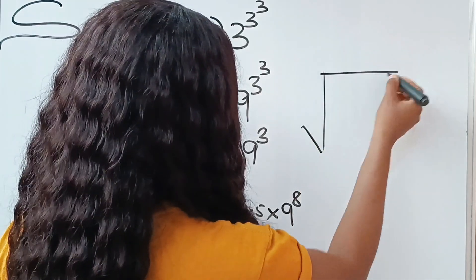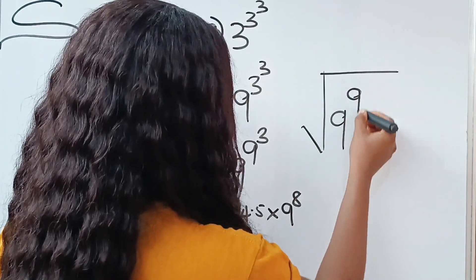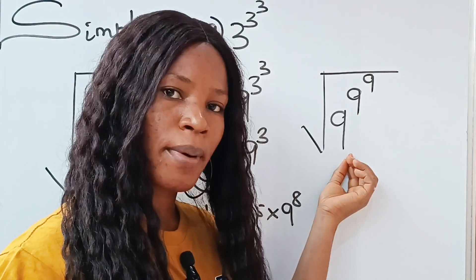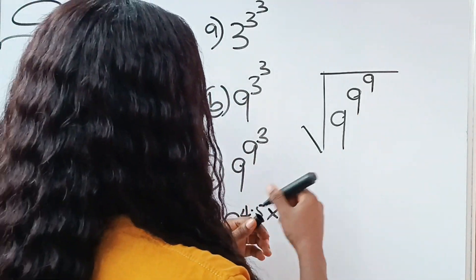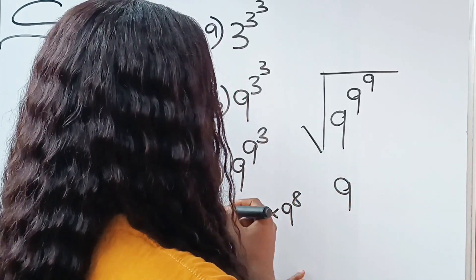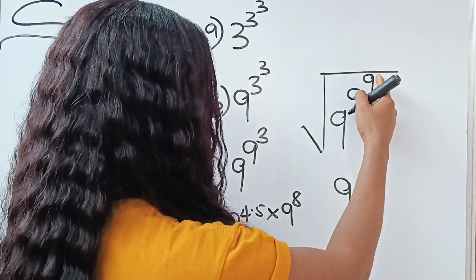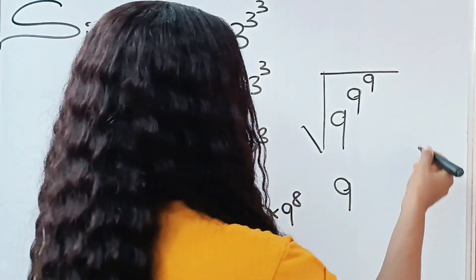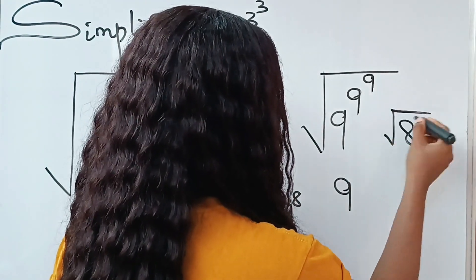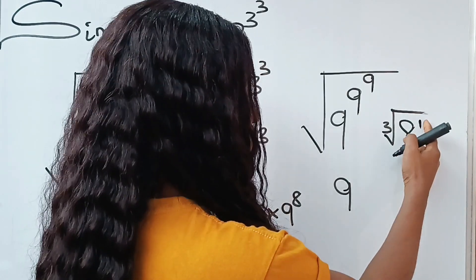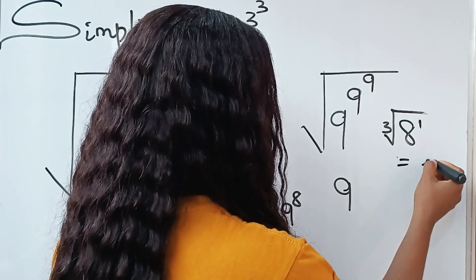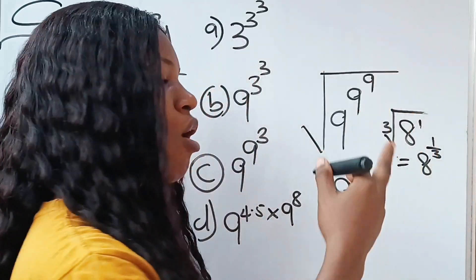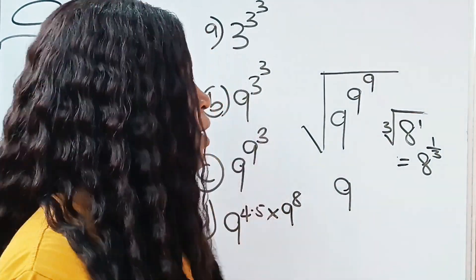Now, back to the question on the board: nine to the power of nine to the power of nine. This time we have two powers on a number. Recall what we did — the cube root of eight is the same as eight to the power of one over three, where one is the numerator and three is the denominator of the fraction.